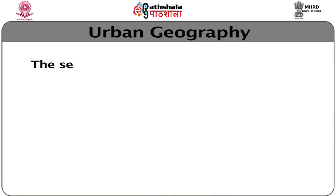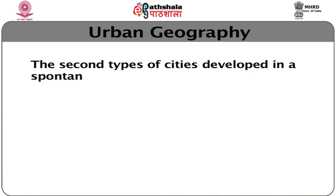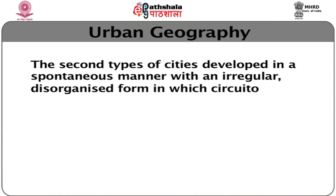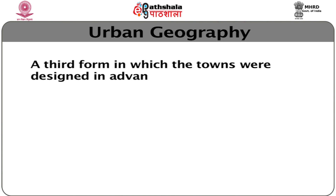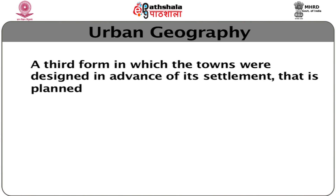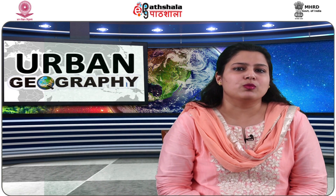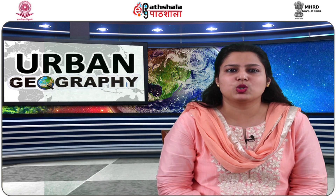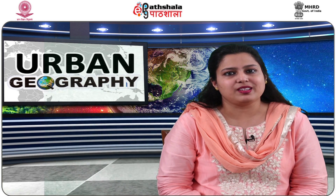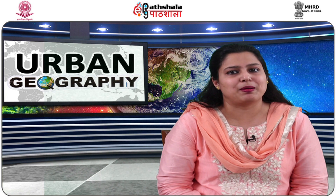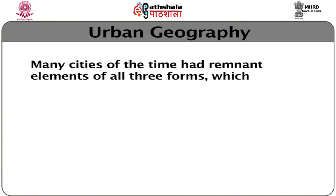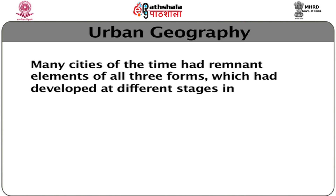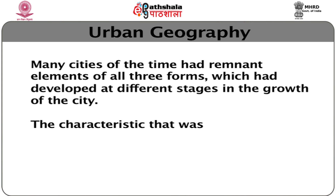There were three different types of city forms in this period based on historic origin. The first was a rectangular system with growth spreading outward in response to topographic characteristics. The second type developed in a spontaneous manner, with an irregular, disorganised form, in which circuitous, winding cowpaths developed into streets. A third form was towns designed in advance of settlement — planned towns — mostly laid out in a fairly rigid gridiron pattern, with the central area reserved for the market and public assembly. Many cities had remnant elements of all three forms.